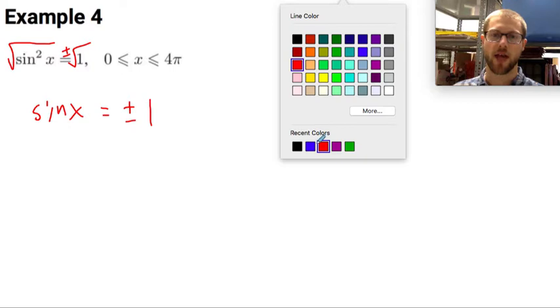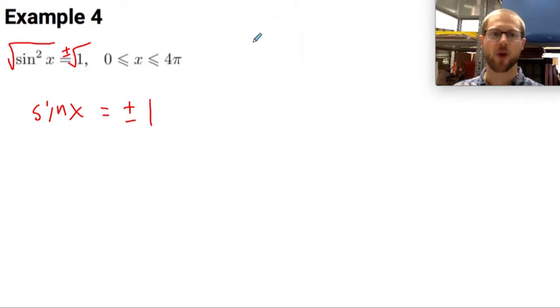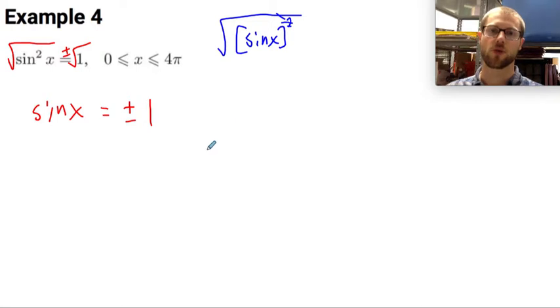And just as an aside, remember that sine squared of x is the same thing as sine of x squared. So if I were to square root this I'm essentially inverting the square root and the square. So that's kind of why this is just equal to sine of x.